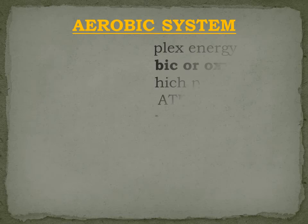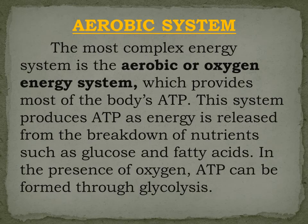Aerobic System. The most complex energy system is the aerobic or oxygen energy system, which provides most of the body's ATP. This system produces ATP as energy is released from the breakdown of nutrients such as glucose and fatty acids. In the presence of oxygen, ATP can be formed through glycolysis.